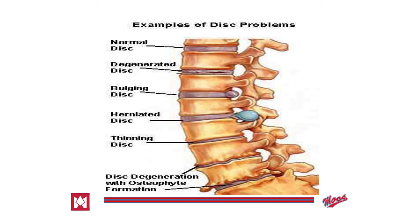Overall, there are five different major disc problems we see. We can classify many of these as degenerative disc disease. A thinning disc is a form of degenerated disc, as is disc degeneration with osteophyte formation. A bulging disc and a herniated disc are more likely caused by a specific injury. The thinning and degeneration that can occur is characteristic of the nucleus not protruding out of that vertebral disc between the vertebral bodies.